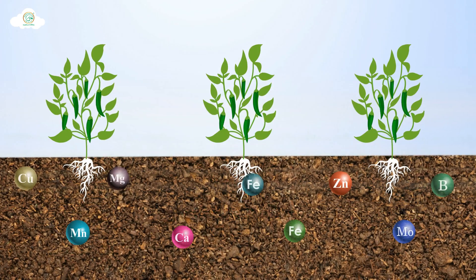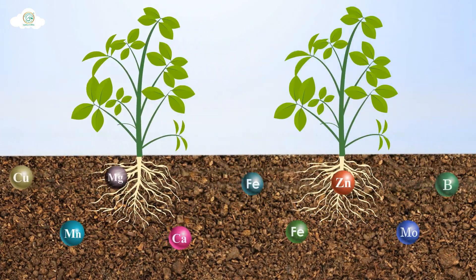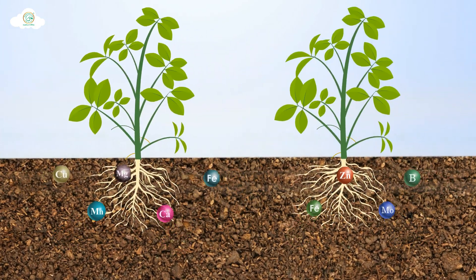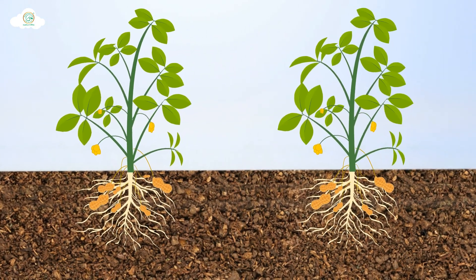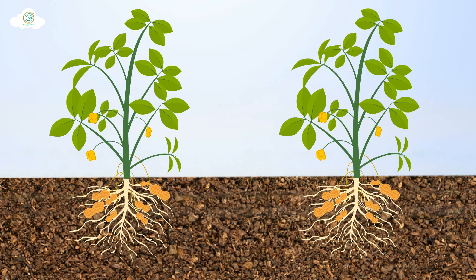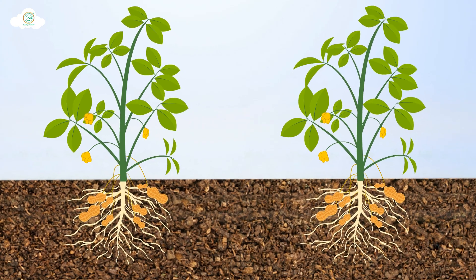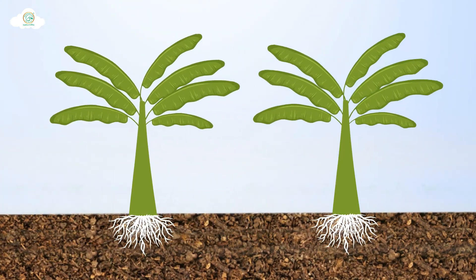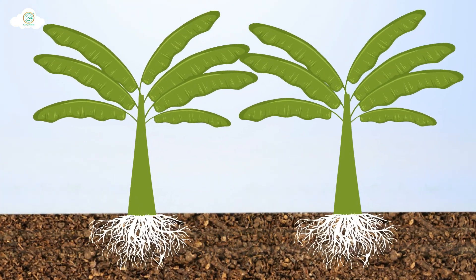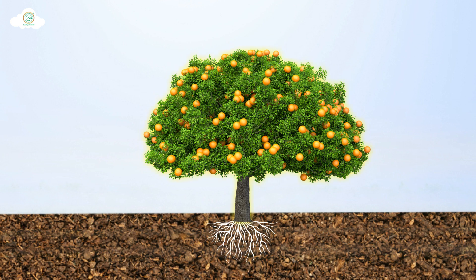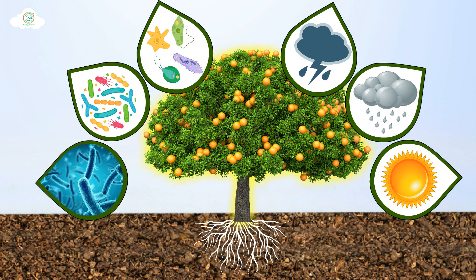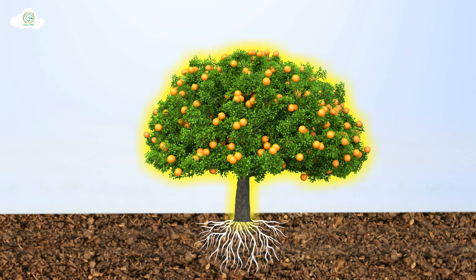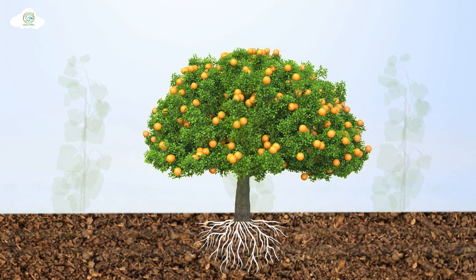Due to the EDTA chelated form, it easily absorbs and helps to fulfill nutrient requirements of crops. It helps with uniform growth of plants and roots, and keeps crops healthy by increasing crop resistance to biotic and abiotic stress.